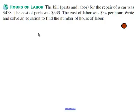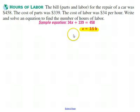Okay, I'm going to assume that you did that. Here are both the equation and the answer. 34 times, well they picked x, I might have picked h, 34 times the number of hours, plus the starting amount, the cost of the parts, 339, is going to equal the total amount, 458.